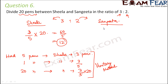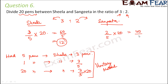Now can you tell me how many pens Sangeeta will get? Had there been a total of 5 pens, Sangeeta would have got 2. So 2 out of 5 multiplied by 20 — that is 40 by 5, which is 8. So Sheila would get 12 pens and Sangeeta would get 8 pens.